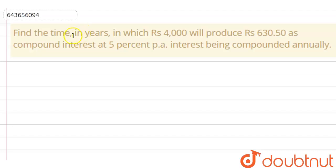Here the question is: Find the time in years in which Rs 4000 will produce Rs 630.50 as compound interest at 5% per annum, interest being compounded annually.